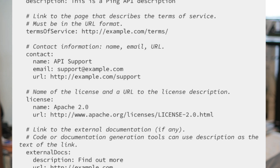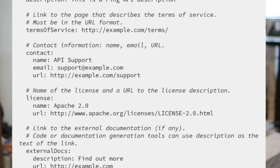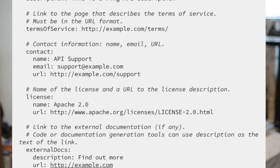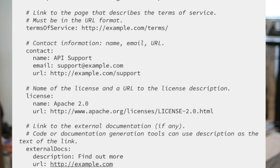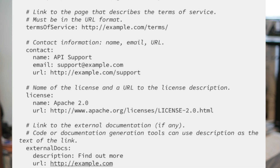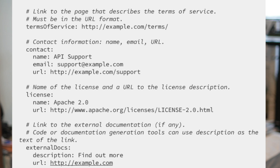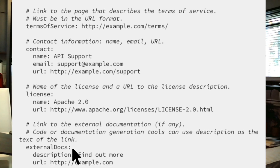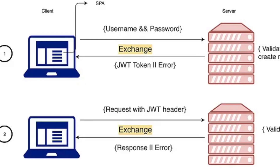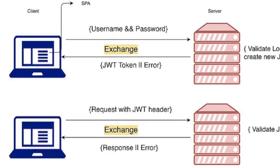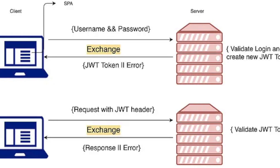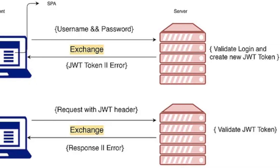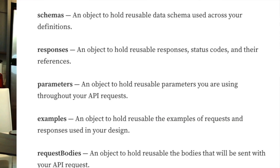In the license section, you can describe, for example, an Apache license or MIT license. You can also link the API specification with external documentation. Under the auth description, you can define bearer authentication — meaning give access to the bearer of this token. The bearer token is a cryptic string usually generated by the server in response to a login request.